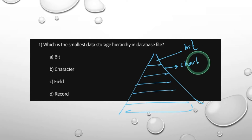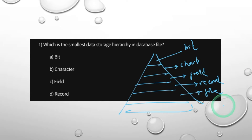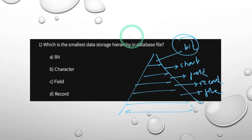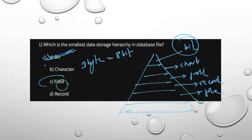What is a field? What is a record? What is a file? The record is a row, the table is a file. The bit is the smallest storage unit. A character is one byte, and one byte is 8 bits.